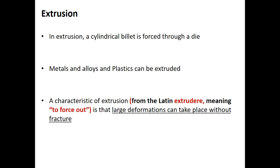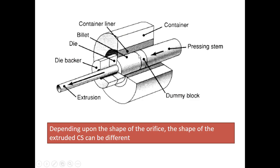Another characteristic of extrusion is that large deformations can take place without fracture. That is an advantage. The deformation undergoes — or the possible elongation — is very high in the case of an extrusion process. The word extrusion is actually coming from a Latin word 'extruder' meaning 'to force out.' Depending upon the shape of the orifice, in an extrusion process we are forcing the metal to a die orifice under high pressure.